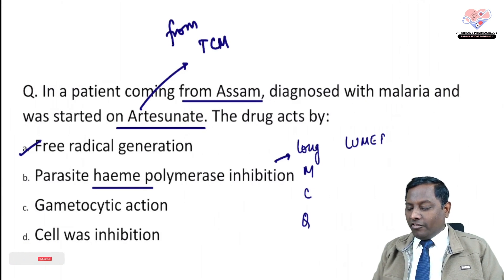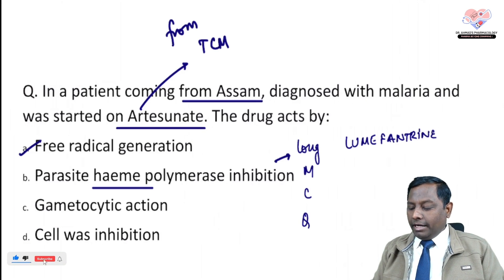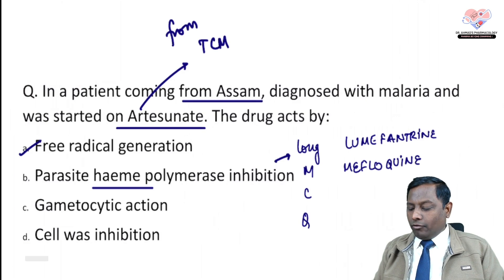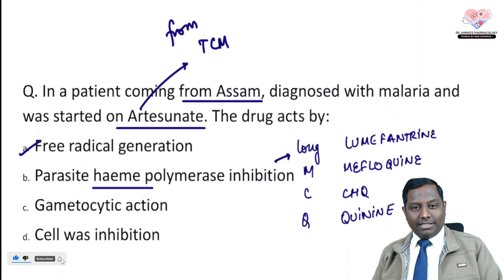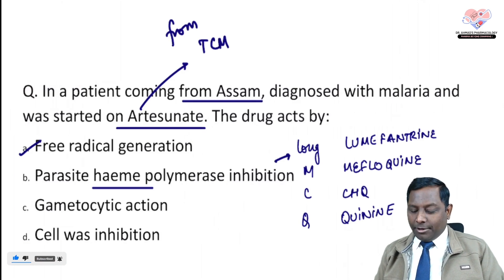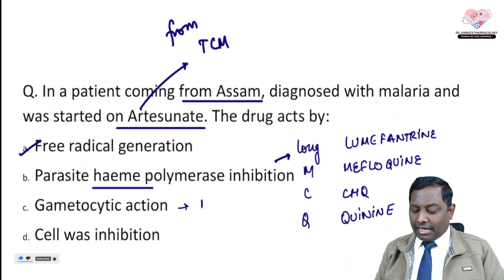Heme polymerase inhibitor drugs include lumefantrine, mefloquine, chloroquine, and quinine. The mnemonic 'long MCQ aap ka khoon jala dete hain' helps remember: Lumefantrine, Mefloquine, Chloroquine, Quinine.